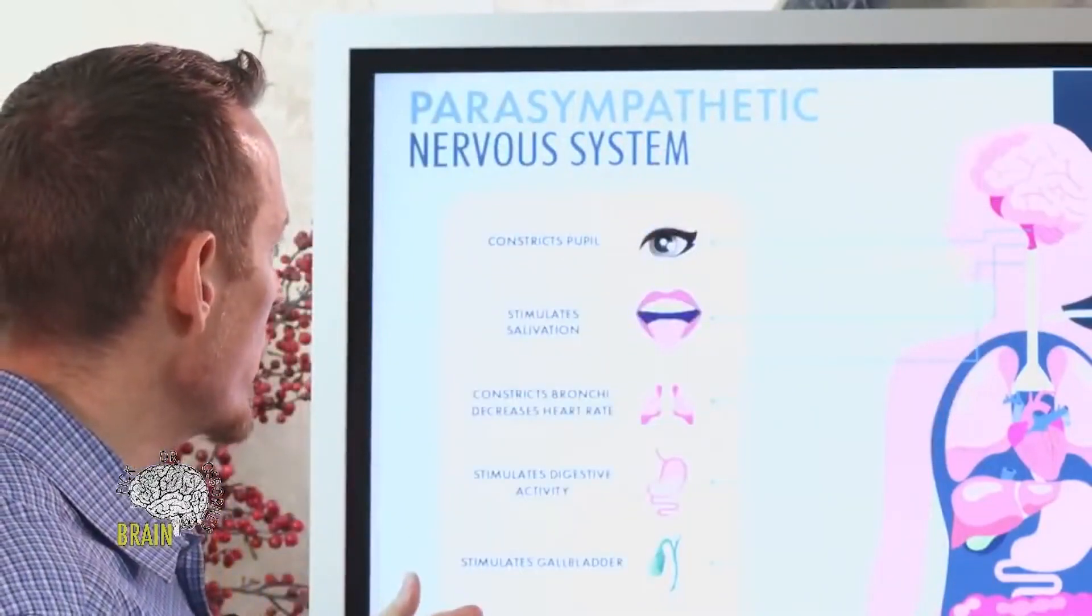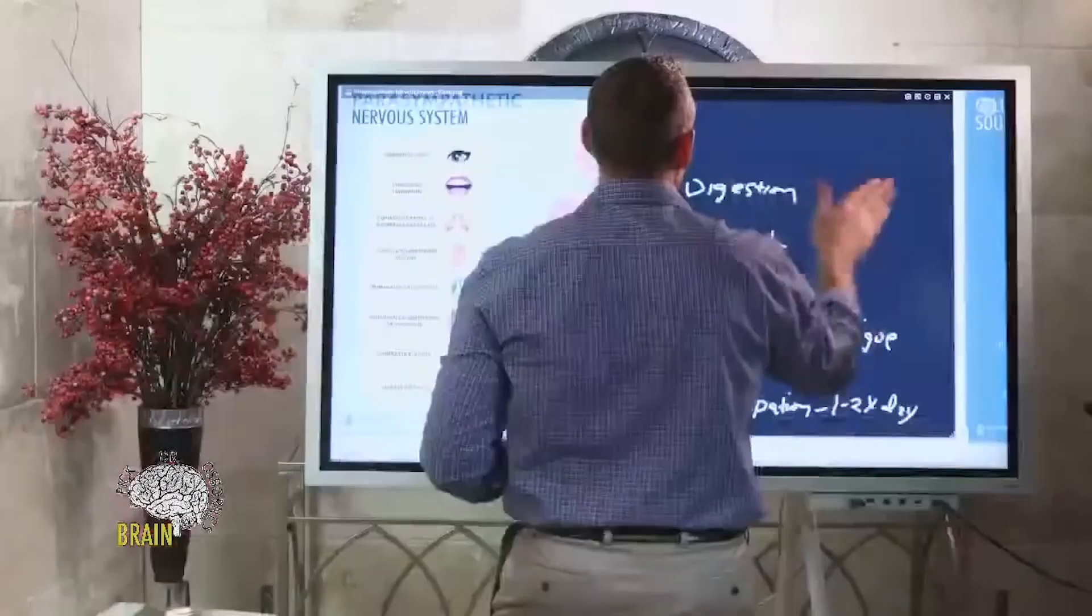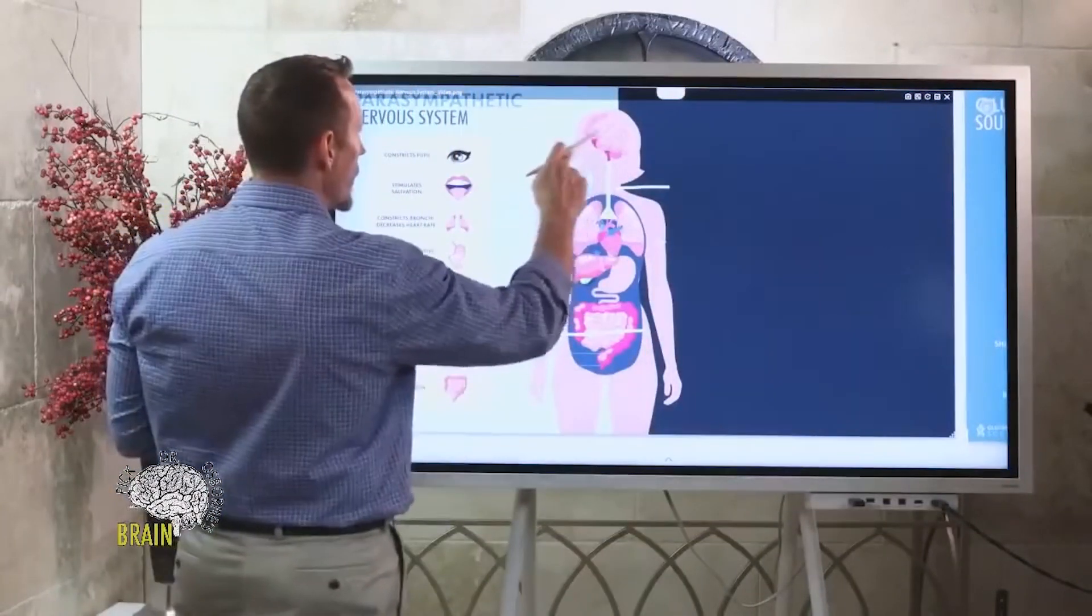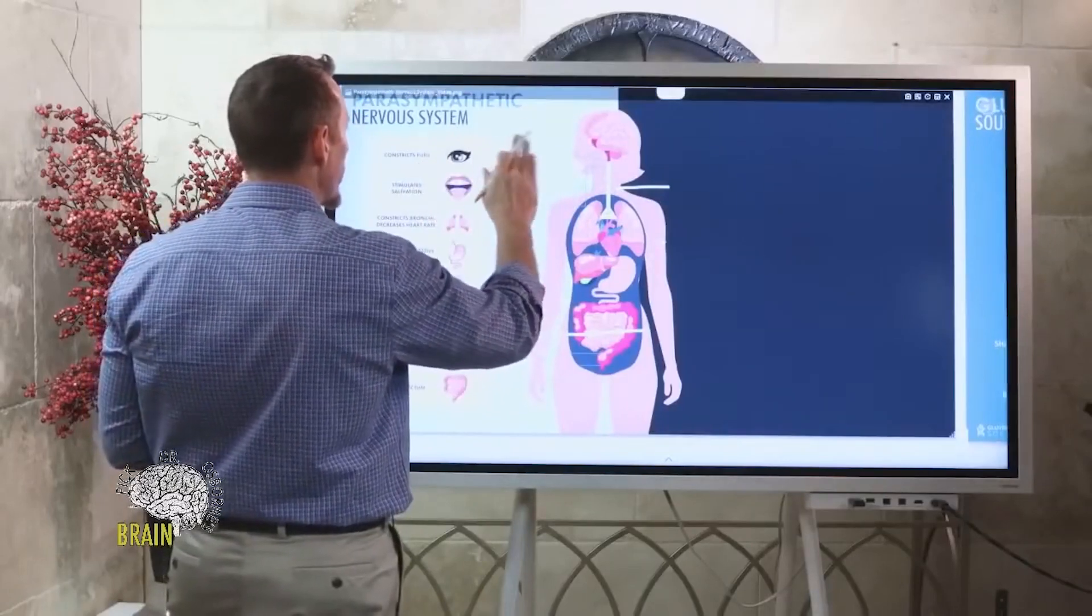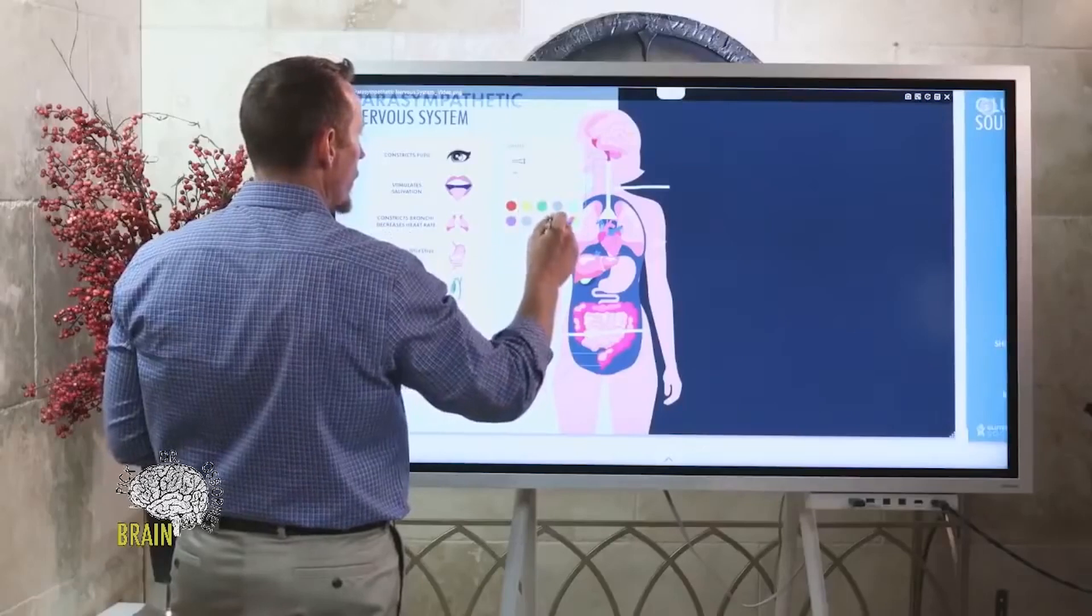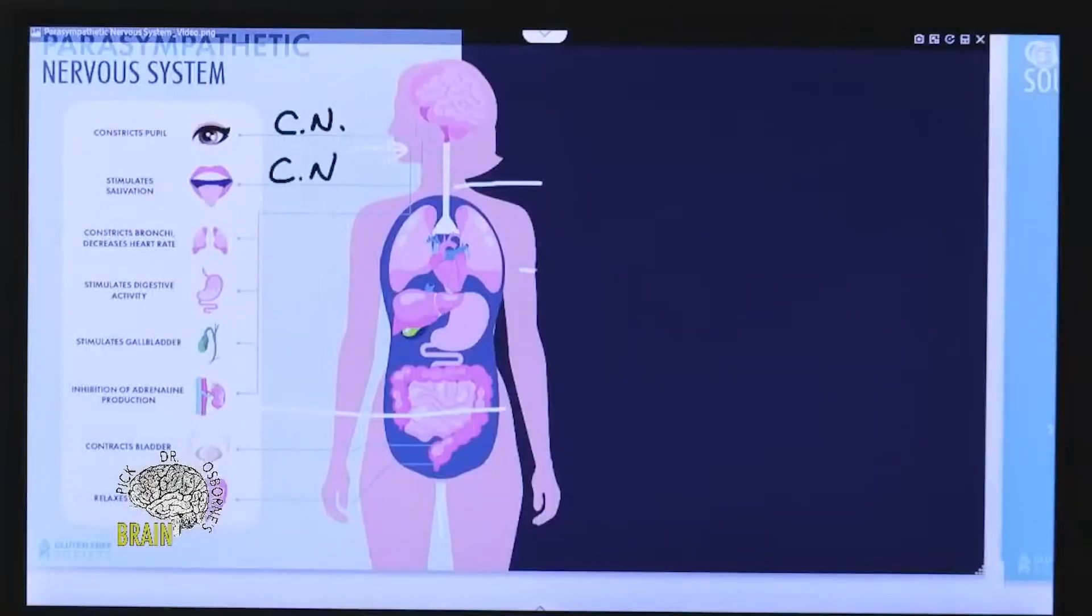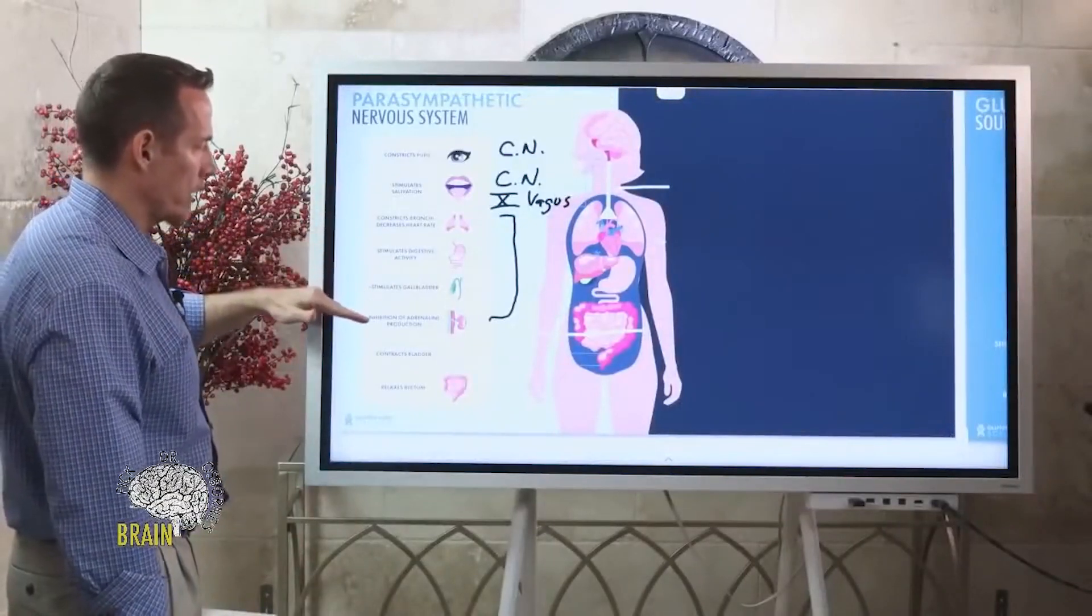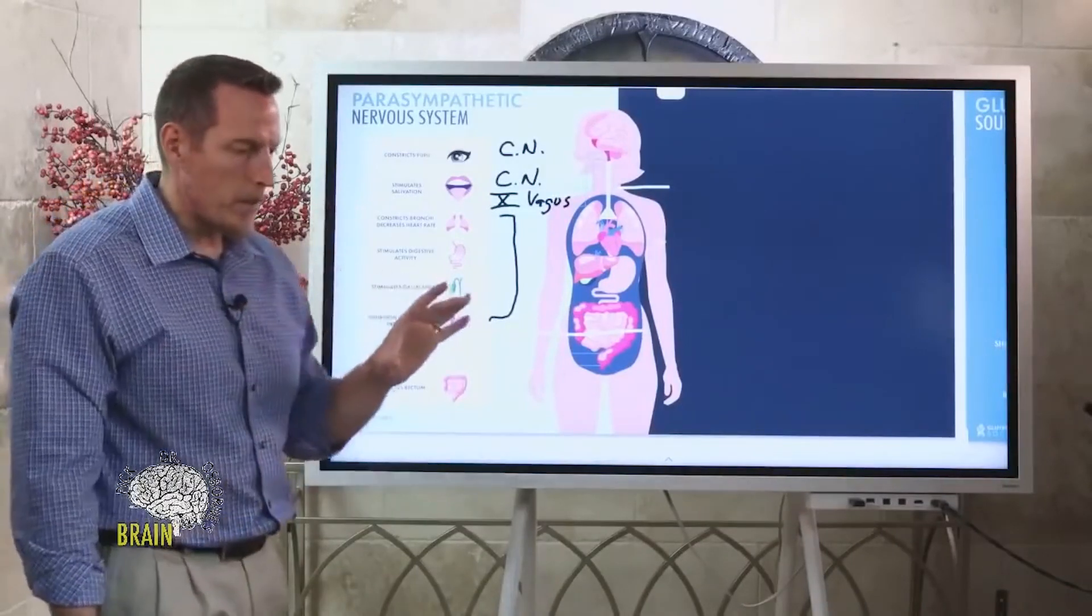The number one factor involved in regulating this entire system - what feeds your eye are cranial nerves, the specialized nerves that come directly off of your brain. Then you have cranial nerve 10, which most people have heard of: the vagus nerve. The vagus nerve feeds all of this - your heart rate, your lungs, your digestion, your gallbladder, your adrenaline.